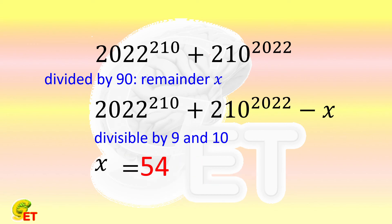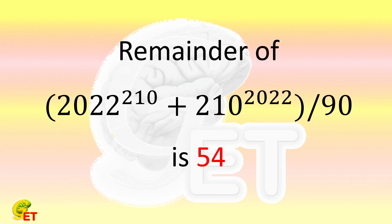So the remainder of this big number divided by 90 is 54. Thank you for watching and see you next time.